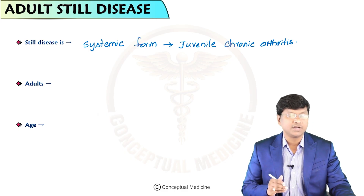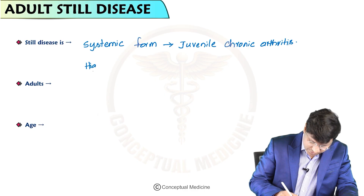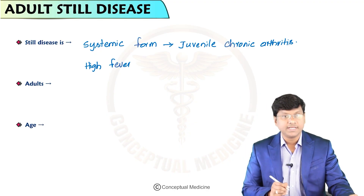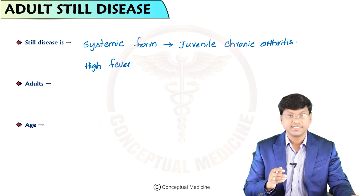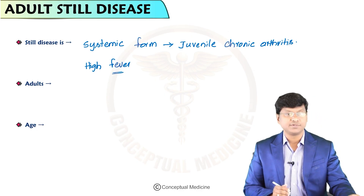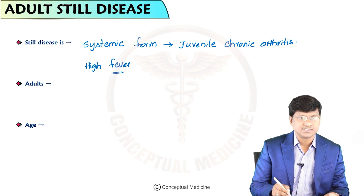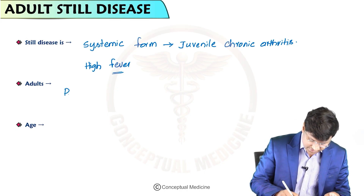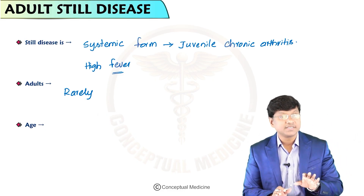In these patients, along with chronic arthritis, there will also be the presence of high spiking fever. This high spiking fever is much more prominent, especially at the outset, compared to the arthritis. As the name tells you, it is Adult Still's disease — but this particular syndrome occurs very rarely in adults.